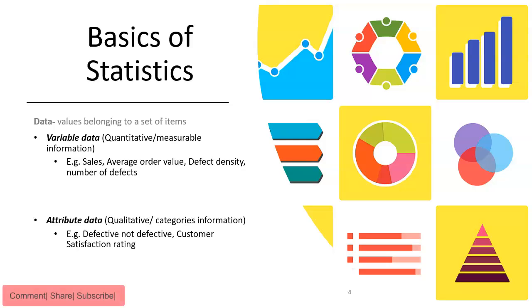These can be further classified in terms of continuous and discrete data. Variables can be continuous and or discrete, and attribute data is only discrete type of data. Let us see what these two terms are now.